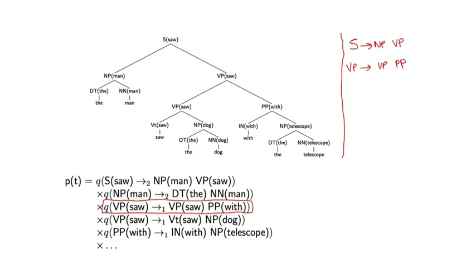And these dependencies are linked to particular grammatical relations. So, for example, we have the ability to say how likely is a prepositional phrase with preposition with to modify a verb phrase with head saw. That's basically what this rule is saying.